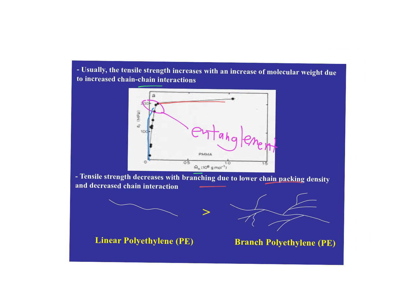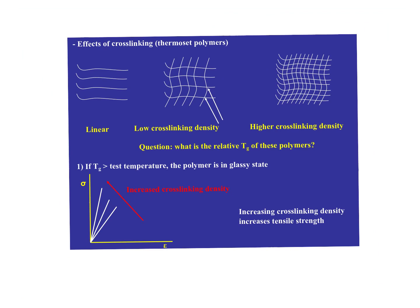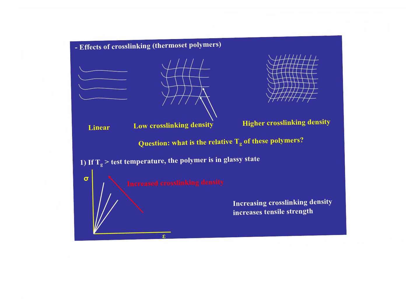Tensile strength also increases with branching due to lower chain-packing density and decreased chain interaction — linear versus branched polyethylene is the classic example. For crosslinking effects: a linear polymer is capable of sliding out to infinity; lightly crosslinked is not; highly crosslinked is going to be a really brittle material. The higher cross-link density polymer will be more brittle, while the lightly crosslinked one is less brittle than the highly crosslinked one. Think about that elastic portion of the curve when comparing those samples.